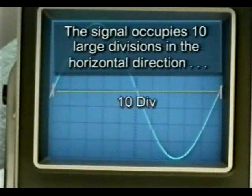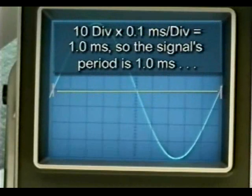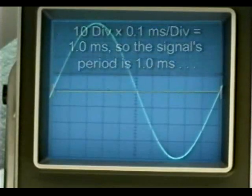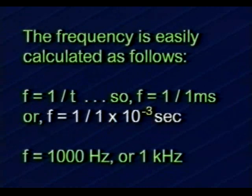Our sine wave occupies 10 large divisions horizontally. 10 divisions multiplied by 0.1 milliseconds per division equals 1 millisecond, so the signal's period is 1 millisecond — meaning it takes 1 millisecond for the sine wave to complete one cycle. The frequency is easily calculated using the formula f equals 1 divided by T.